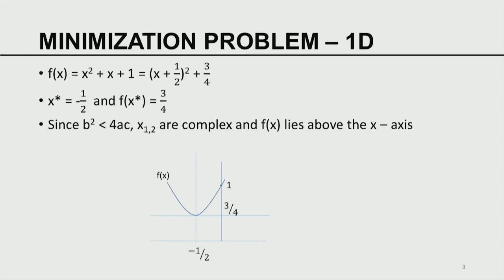Continuing this example of minimization in 1D: consider f(x) = x² + x + 1. This can be written as (x + 1/2)² + 3/4. In this case, x* = −1/2 and f(x*) = 3/4. Since B² < 4AC, x₁ and x₂ are complex and f(x) lies above the x-axis — meaning it has no real intersection with the x-axis.